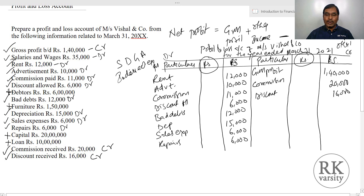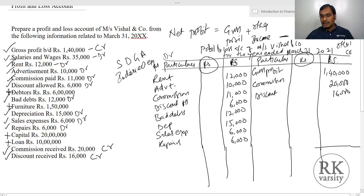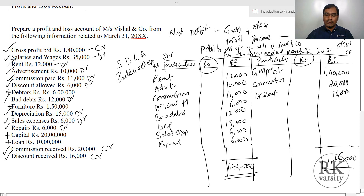Before balancing, we verify which side is highest. The credit side totals 1 lakh 76,000. We close the balance — so 1 lakh 76,000 is the total of gross profit plus other income. The difference represents gross profit plus other income minus selling and distribution expenses, which gives us the net profit.